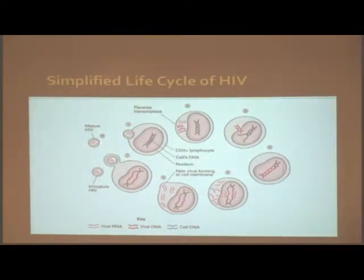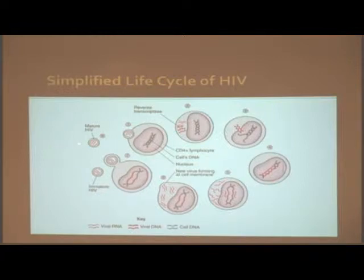To be able to infect other cells, the budded virus must mature. It becomes mature when another HIV enzyme, HIV protease, cuts structural proteins in the virus, causing them to rearrange.